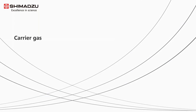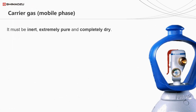Speaking of carrier gases, one of the most important decisions you'll make when operating your GC and developing new methods is how to use your carrier gas and which choice of gas. As a general rule, there are some things we require from a carrier gas: it must be inert, extremely pure, and completely dry. Your gas should not react with your sample in any way, should be pure and free from contaminants, and certainly free from moisture. The reason is that any contaminants within the carrier gas will be detected by the detector and could have an adverse effect on your chromatography and lower the sensitivity of the system.